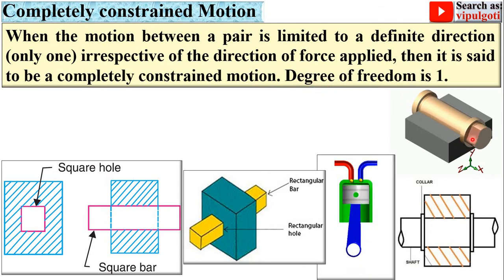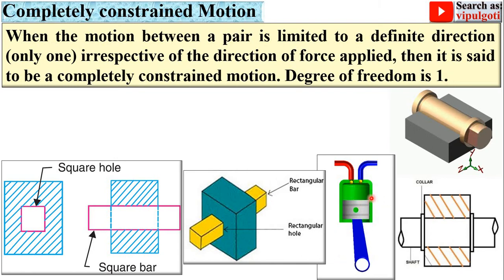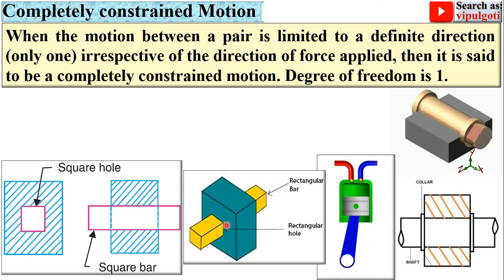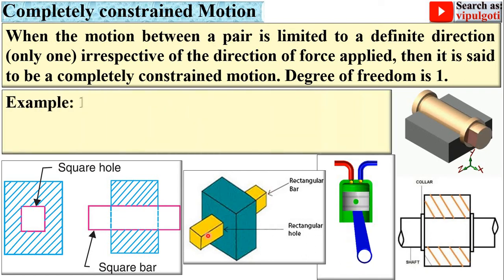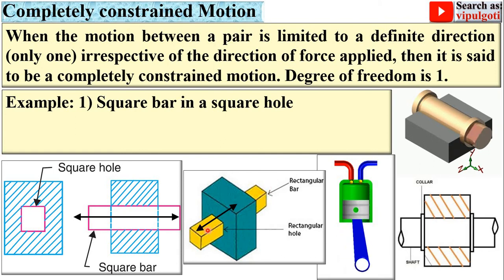If you look at this figure, it can only rotate about the x-axis, meaning only one rotational motion is possible — that's why it is called single degree of freedom. In the case of a piston and cylinder, the piston reciprocates only in the vertical direction, having single degree of freedom. Similarly, this rectangular bar reciprocates only in this hole — again single degree of freedom.